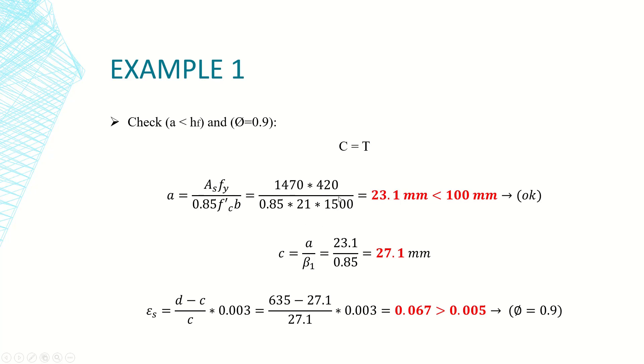So this will equal direct application: As fy, 0.85 f'c, and b. Also here b should be 1200. So the value of a will be much less than 100 which is the depth of the flange, the thickness of the flange.